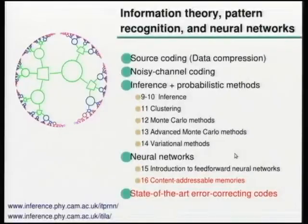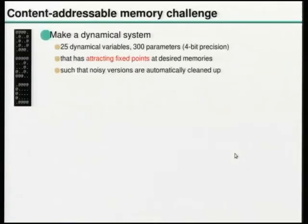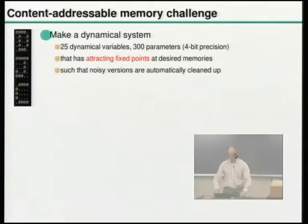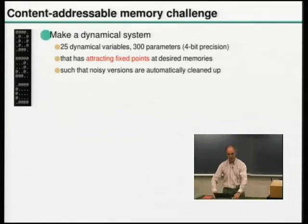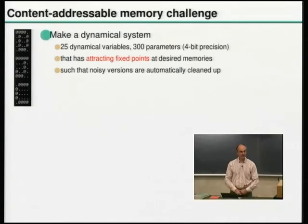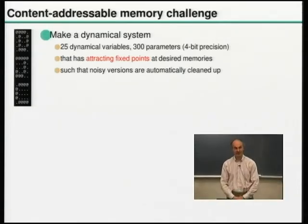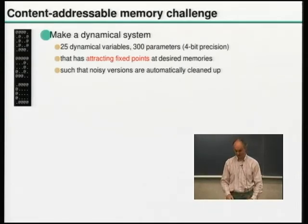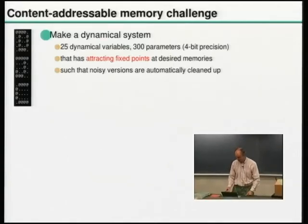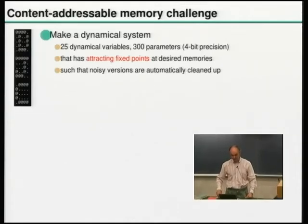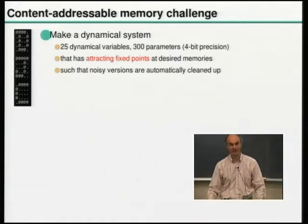I've highlighted in red the two things we're doing today. The content addressable memory challenge is to understand how brains do content addressable memory — how do we fill in the gaps? How do we recognize things based on their contents even when some cues are noisy? A precise way of stating this challenge is to make a dynamical system that can do content addressable memory.